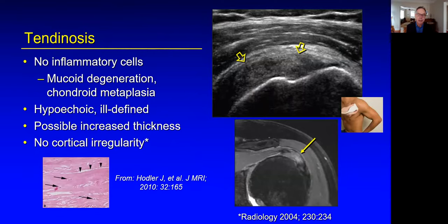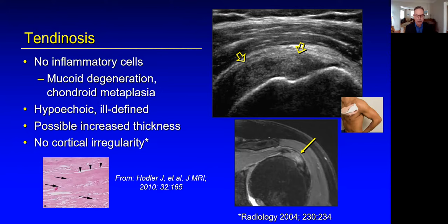Finally, tendinosis. The tendon will appear hypoechoic, but you can see it's more heterogeneous. You can't really define a defect. The indirect signs are missing — there's no cortical irregularity, no cartilage interface sign, and no volume loss or abnormal morphology.